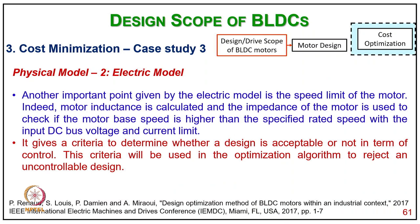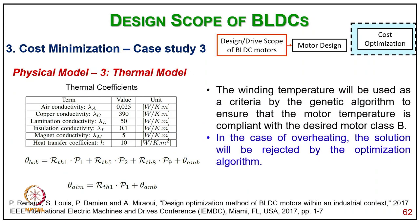Coming to the electrical model: the motor inductance is calculated and the impedance of the motor is used to check if the motor base speed is higher than the specified speed with the input DC voltage and current limit. This gives a criterion to determine whether a design is acceptable or not in terms of control, and is used in the optimization algorithm to reject uncontrollable designs. The thermal model gives θ = RTS1·P1 + RTS5·P2 + RTS8·P9 + θ_ambient, and θA = RTS1·P1 + θ_ambient. The winding temperature is used as a criterion for the genetic algorithm to ensure motor temperature is compliant with class B insulation. In case of overheating, the solution is rejected by the optimization algorithm.